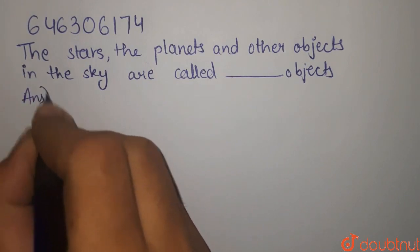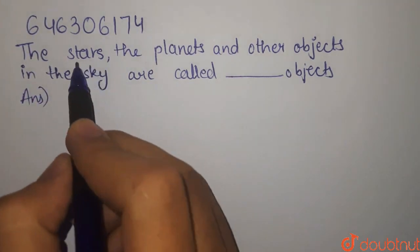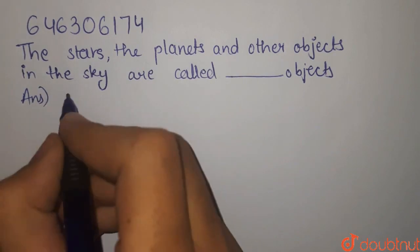So, those objects that are the stars, planets, we call celestial objects.